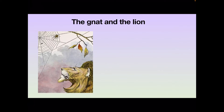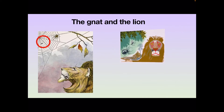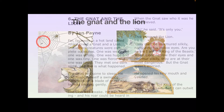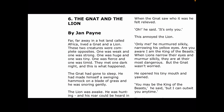So returning to our text that we are reading — The Gnat and the Lion. Let's get the pictures up. There's our gnat. We're coming back to The Gnat and the Lion and we're going to ask questions about this story that we will have to find evidence to support. So let's start with the story. Far, far away in a hot land called Africa lived a gnat and a lion. These two creatures were complete opposites. One was weak and one was strong. One was huge and one was tiny. One was fierce and one was timid. They met one dark night and this is what happened.